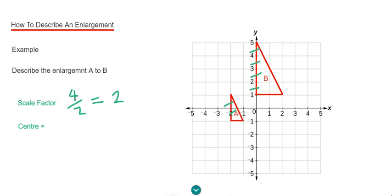Then we just need to find our centre of enlargement. You do this by drawing lines through the corresponding corners of triangles A and B. Let's draw a line going through the top corners first.